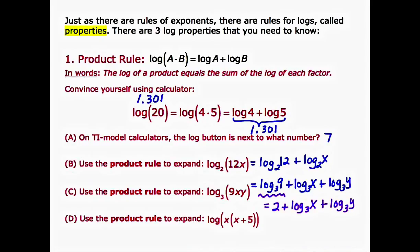For our final example of the product rule, example D: use the product rule to expand the log of x times (x plus 5). We've got two factors — x and (x plus 5) — so this turns into a sum: log of x plus log of (x plus 5). There's no base given, which means there's an implied base of 10 — this is a common log. So the final answer is log of x plus log of (x plus 5). On this slide we learned the product rule: log of a times b equals log of a plus log of b. Let's go to the next slide.